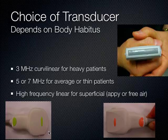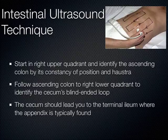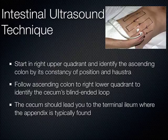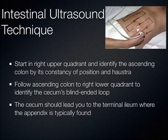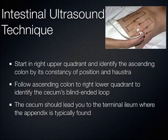We use a technique called mowing the lawn, where you start in the right upper quadrant. You can see the ascending colon there — it's always in the right upper quadrant and it's got haustra. You guys have had this in anatomy: haustra versus the plicae circularis that you see with the small bowel. You can identify those on ultrasound when filled with fluid. You follow the ascending colon down to the right lower quadrant, where you expect to see the cecum with its blind-ended loop, which brings you to the terminal ileum where the appendix juts off.